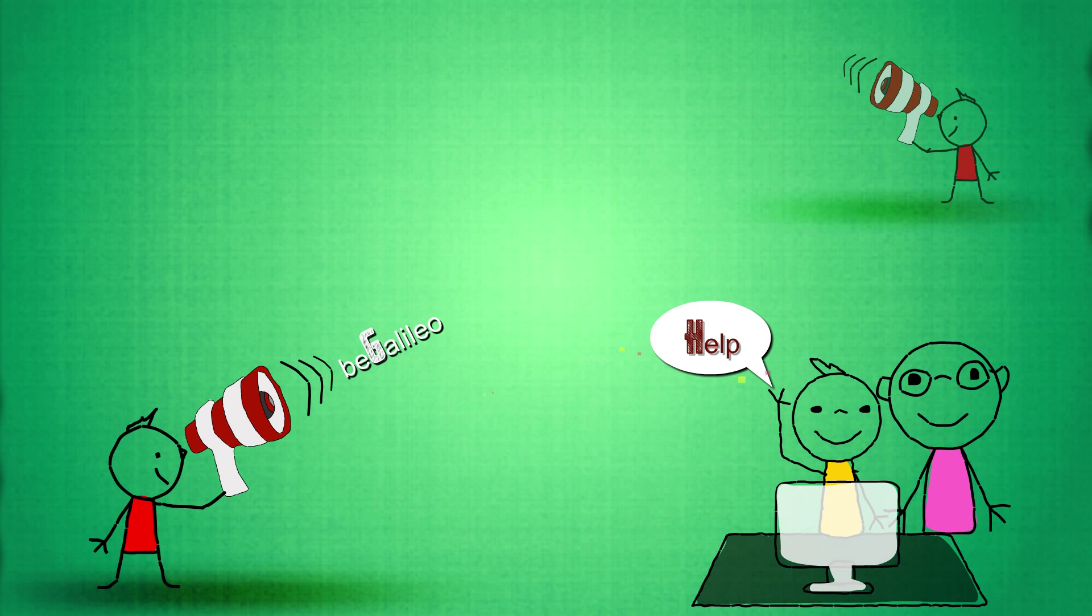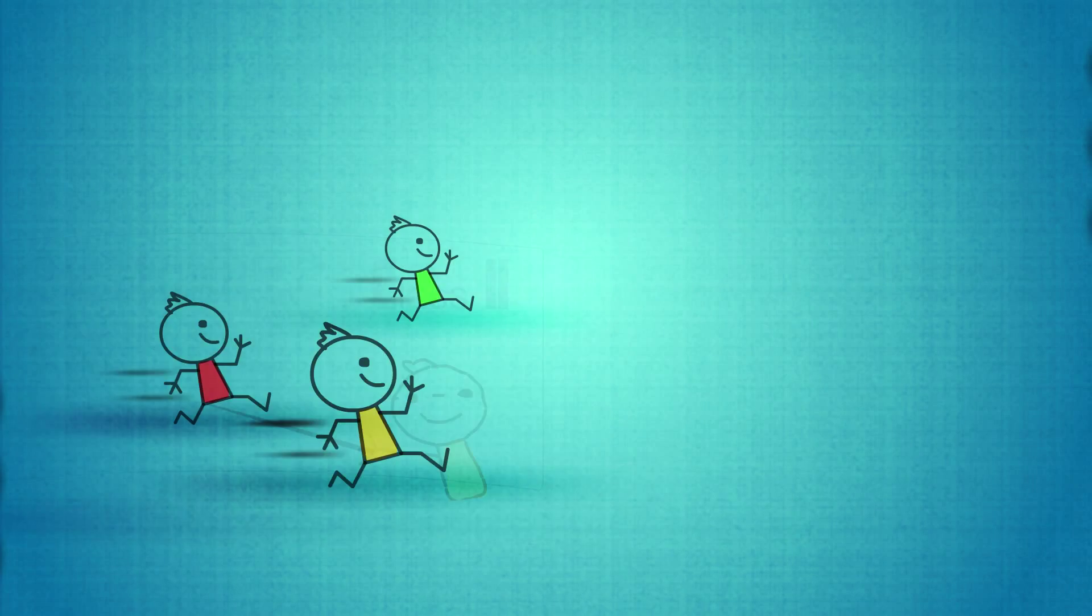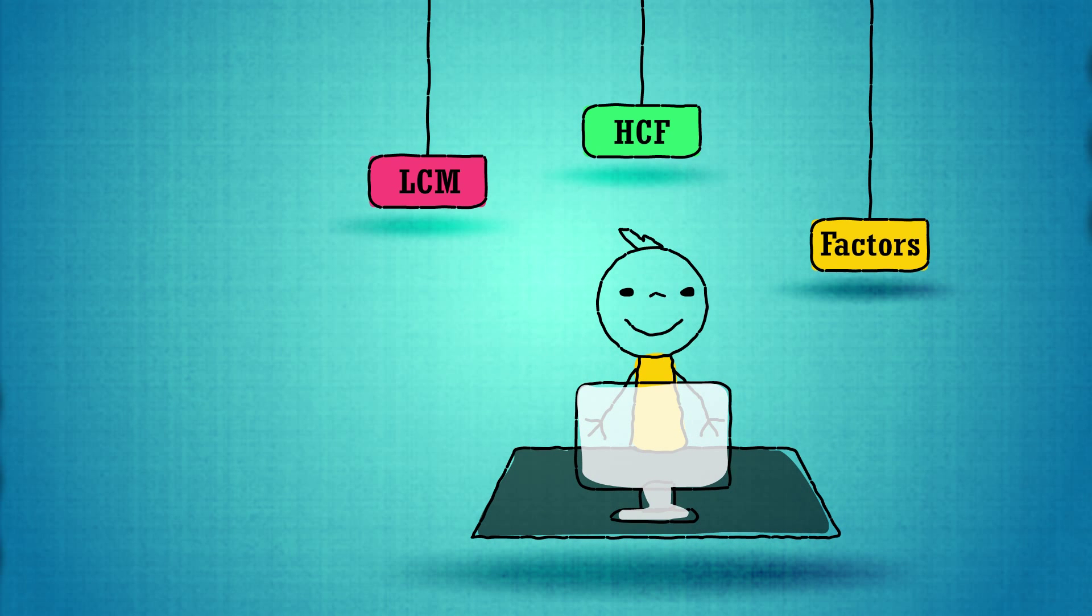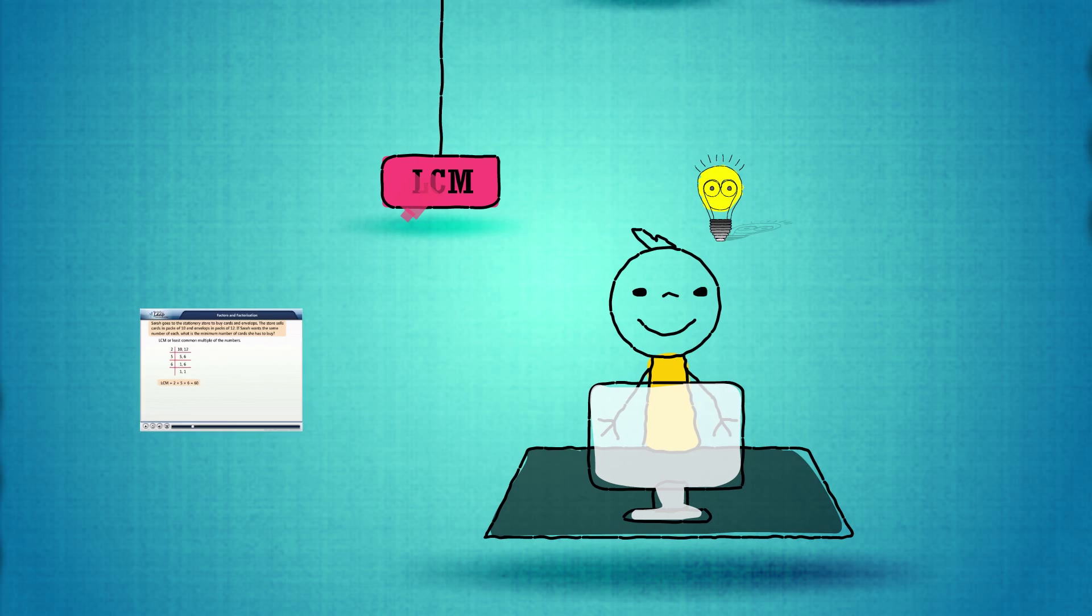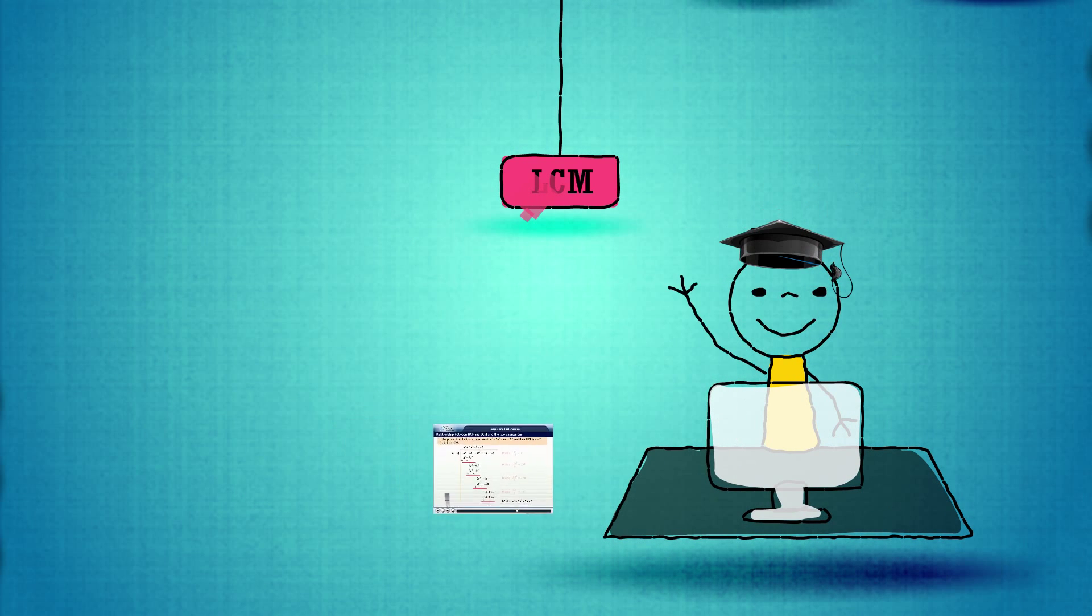This is how it works. As soon as a topic is taught in class, the student starts practice sessions on Be Galileo. After a session, Be Galileo identifies which related topics the child needs help with and provides lessons to master the concept.